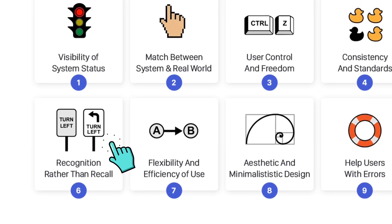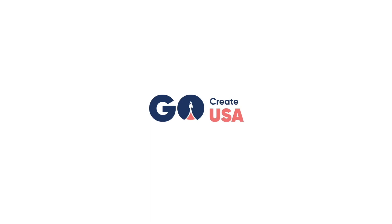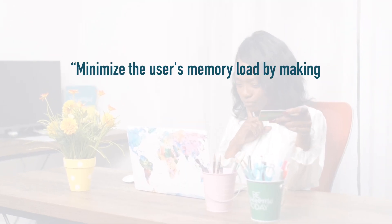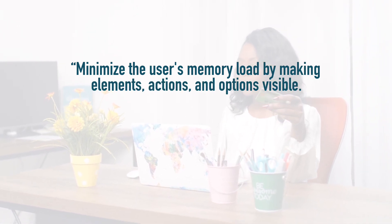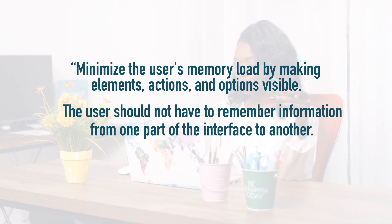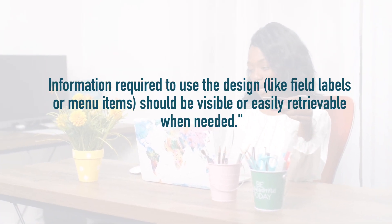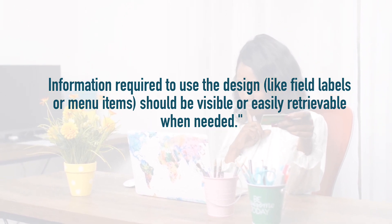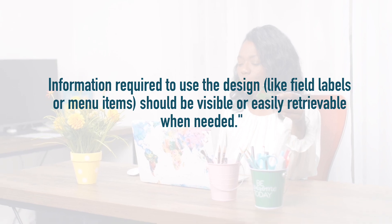This is a function of the 6th Usability Heuristic according to Nielsen. Welcome to GoCreateUSA Channel. The 6th Usability Heuristic states that you should minimize the user's memory load by making elements, actions, and options visible. The user should not have to remember information from one part of the interface to another. Information required to use the design, like field labels or menu items, should be visible or easily retrievable when needed.